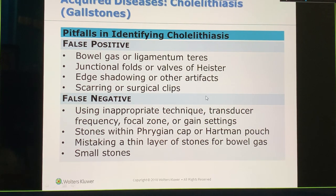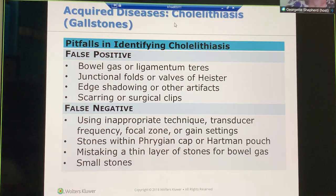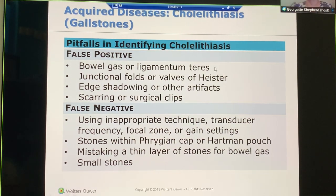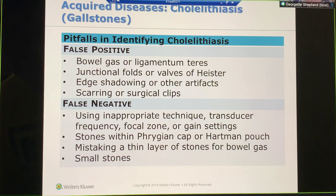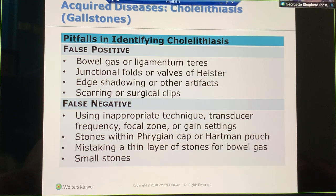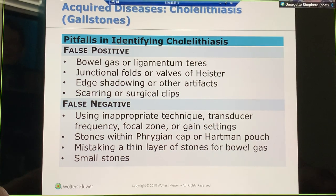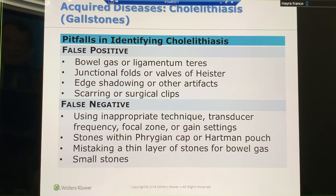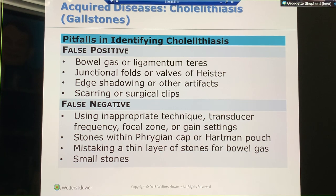Pitfalls? The bowel gas or the ligamentum teres. Why would the ligamentum teres be a problem? Because it's hyperechoic, right. The only thing about the ligamentum teres — it will travel with your transducer. The ligamentum teres is what separates the left lobe into the medial and lateral segments. So if I'm in the decubitus, I'm throwing the liver towards my left lobe. You've got to be careful of that.